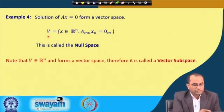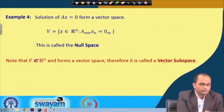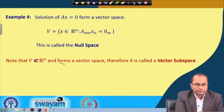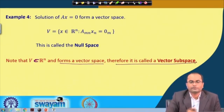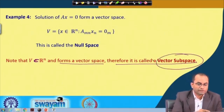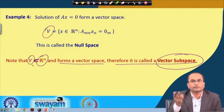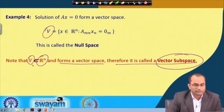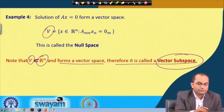Note that this set V is a subset of R^n and forms a vector space; therefore it is also called a vector subspace. This is a vector space that is a subset of another vector space R^n, which is why we call it a vector subspace. We will be talking about vector subspaces shortly.